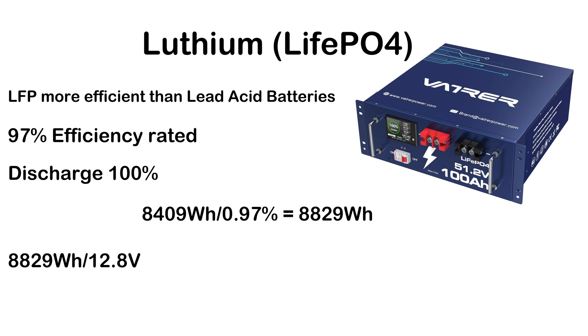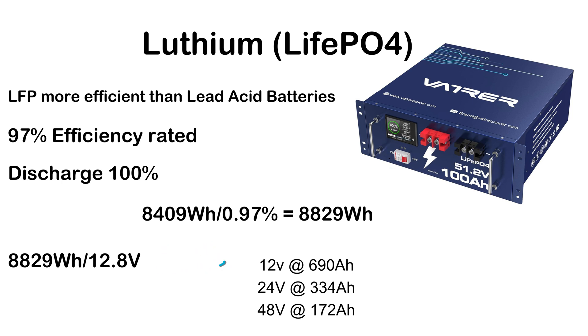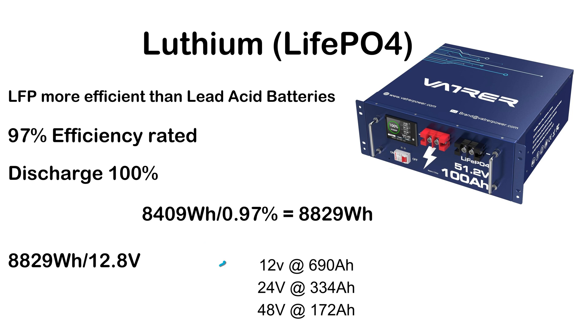For a 12-volt battery system, you will need 690 amp-hours. For a 24-volt battery, you would need 344 amp-hours. And for a 48-volt battery, you're going to need 172 amp-hours.